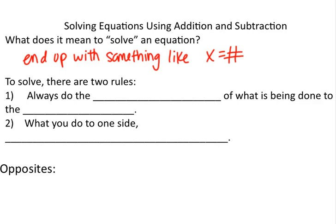To solve, there are two rules. We're always going to do the opposite, also called the inverse, of what's being done to the variable. And then what I do to one side, I'm going to do to the other side.